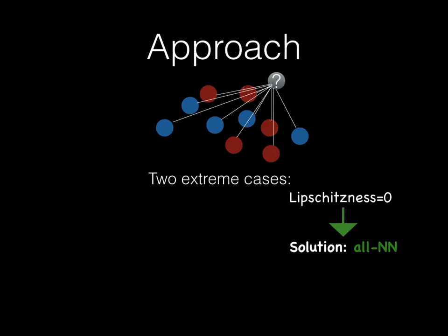On the other extreme, there is the case where the Lipschitz constant of our model is zero, implying that we are left to cope with the variance due to the noisy labels. In this case, the optimal solution is the all nearest neighbors rule.